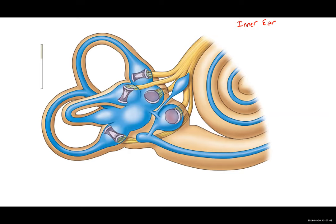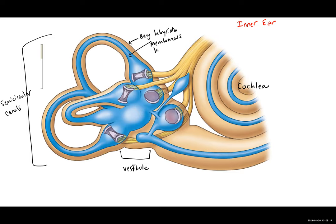We're looking here at our snail-shaped cochlea, our vestibule here, and our semicircular canals. Notice the outer tissue surrounding the inner ear makes up the bony labyrinth, and then all of this blue is showing us the membranous labyrinth.